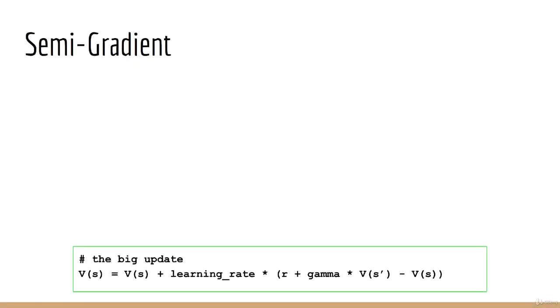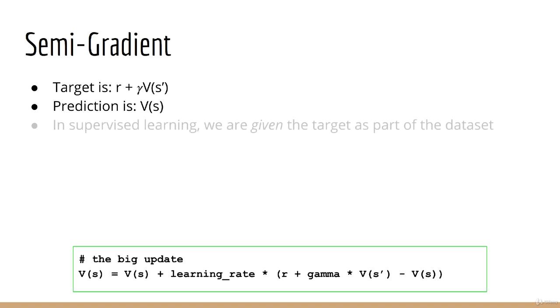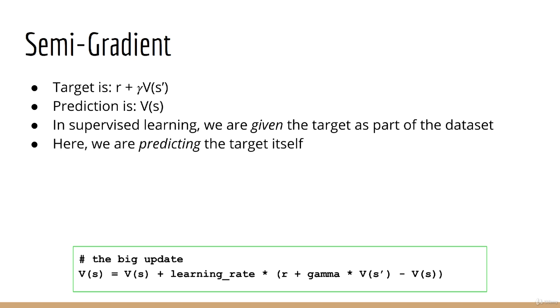There is one odd thing about temporal difference learning. Look carefully at this so-called gradient descent update. The target is r plus gamma times V(s'). The prediction is V(s). If we relate this back to supervised learning, we notice something strange. In supervised learning, we are given the target as part of the dataset. But here we are doing something surprising. We are predicting the target itself.